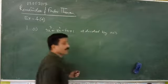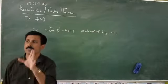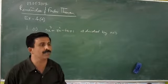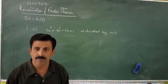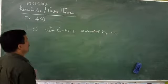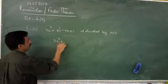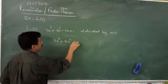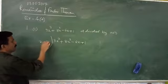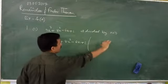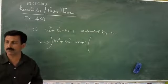In class 10, we studied exactly the same thing but by normal division method. So first I am going to introduce that method. The dividend is 3x³ + 8x² − 6x + 1, and this is going to be divided by x + 3. The question is to find the remainder.